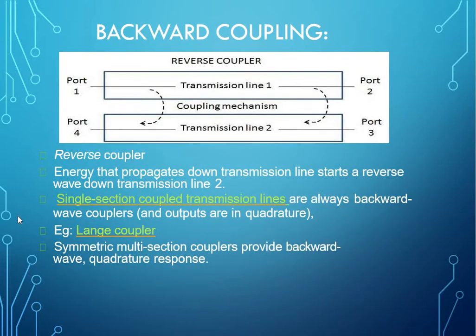Coming to backward coupling, backward coupling is a reverse coupler where the energy that propagates down the transmission line starts a reverse wave down transmission line. They are always backward wave couplers.